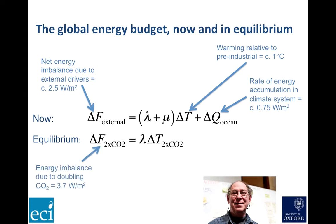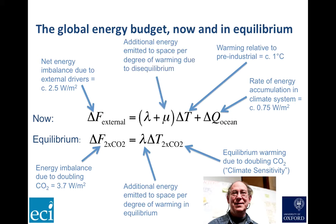The delta F at two times CO2 is the energy imbalance due to a doubling of CO2. Dating back to the work of Arrhenius, this has been pretty well characterized as about 3.7 watts per square meter. And delta T two times CO2 is the equilibrium warming due to doubling CO2 — this is what's called the climate sensitivity. The terms lambda and mu are not things we can observe directly. They depend on how clouds, water vapor, sea ice, and so on, respond to rising temperature. Lambda may be constant over time, but mu certainly isn't, since it depends on how far the system is out of equilibrium.